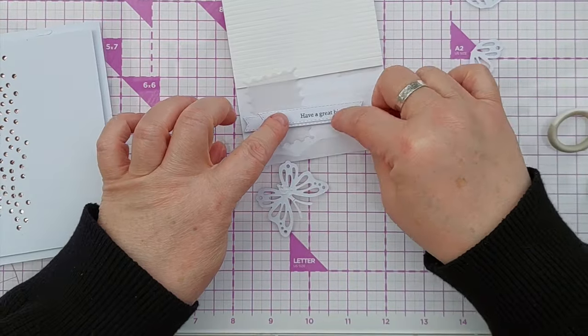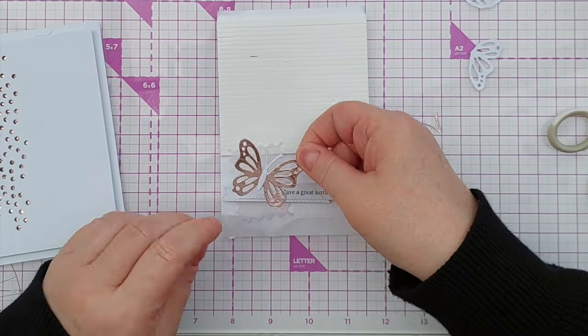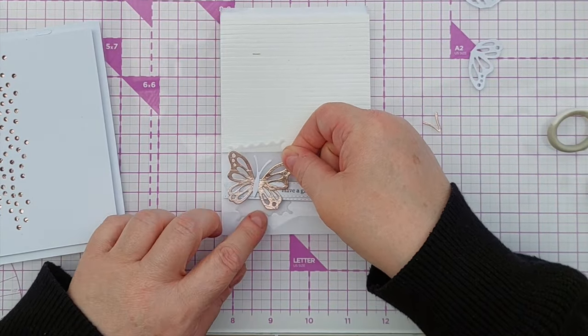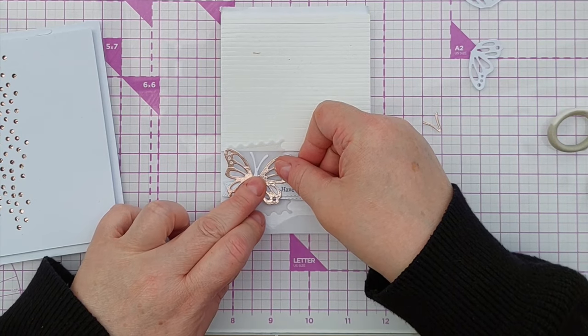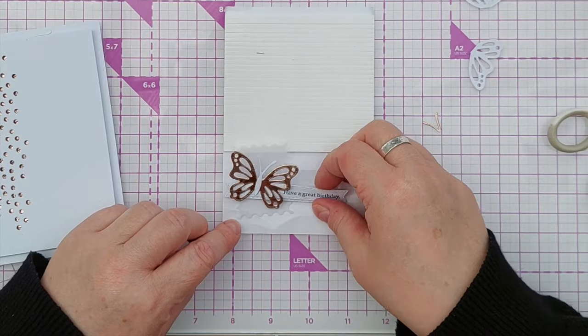Now I'm going to put some glue on the back here and so this doesn't end up sticking to my glass mat I'm going to put it on the release paper of the foam tape and line up my butterfly so I can still read that sentiment but it's coming out from underneath the butterfly.